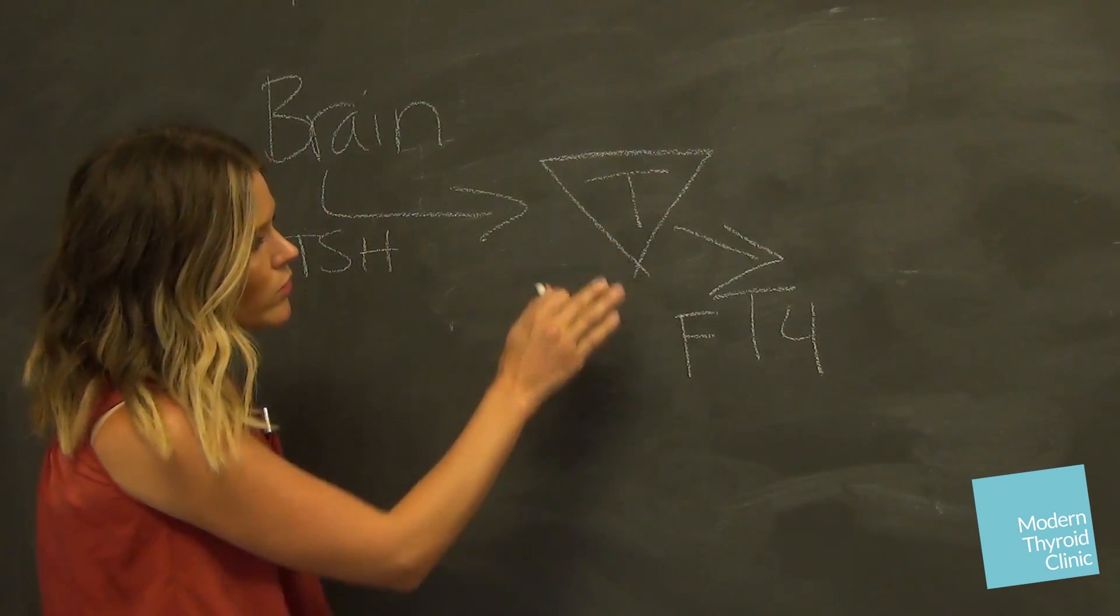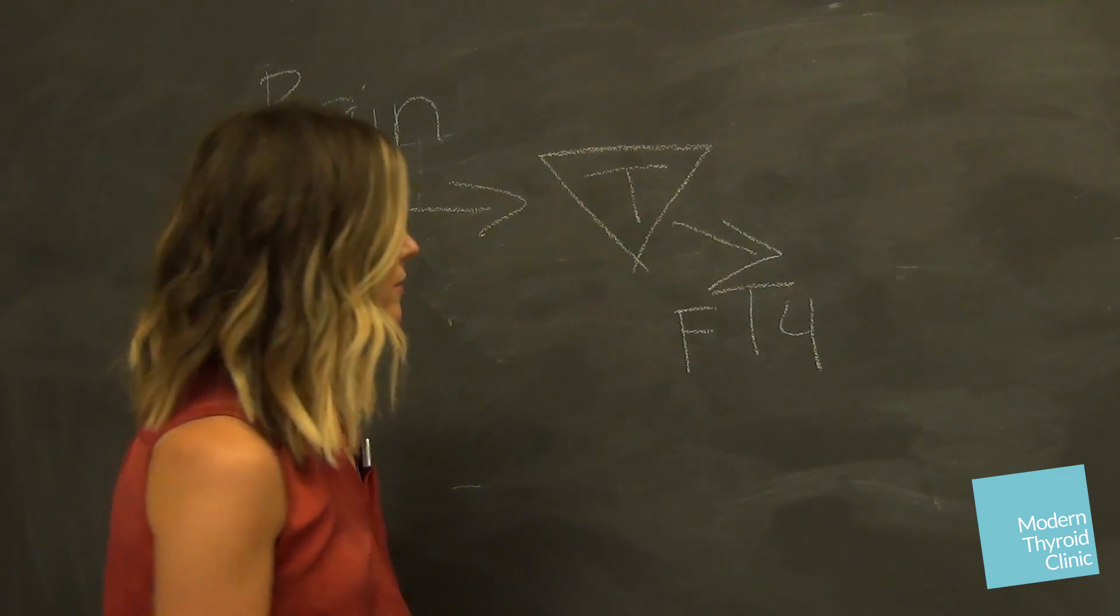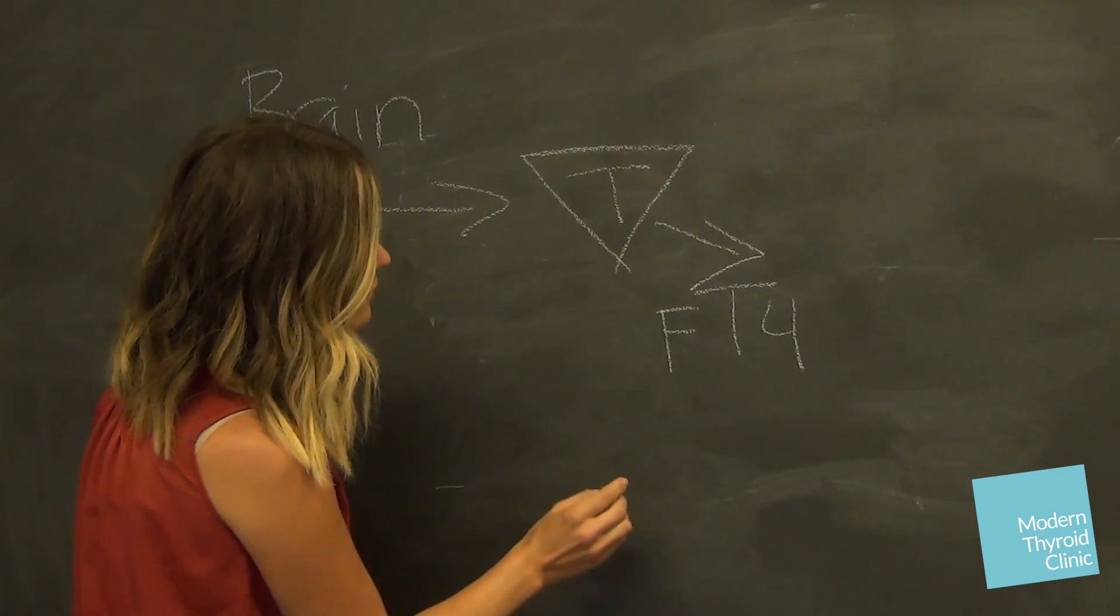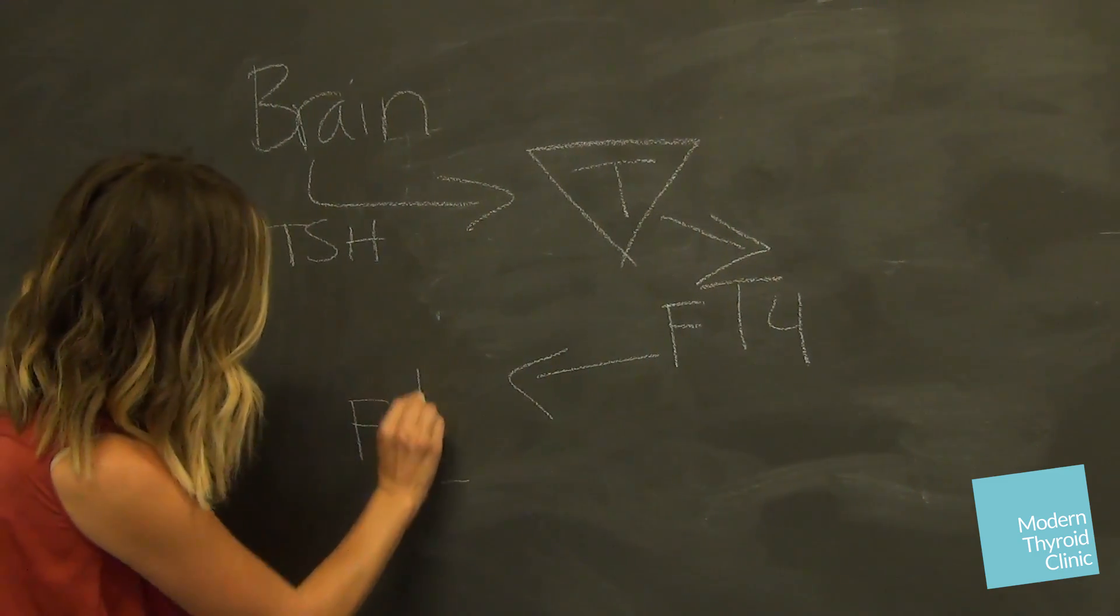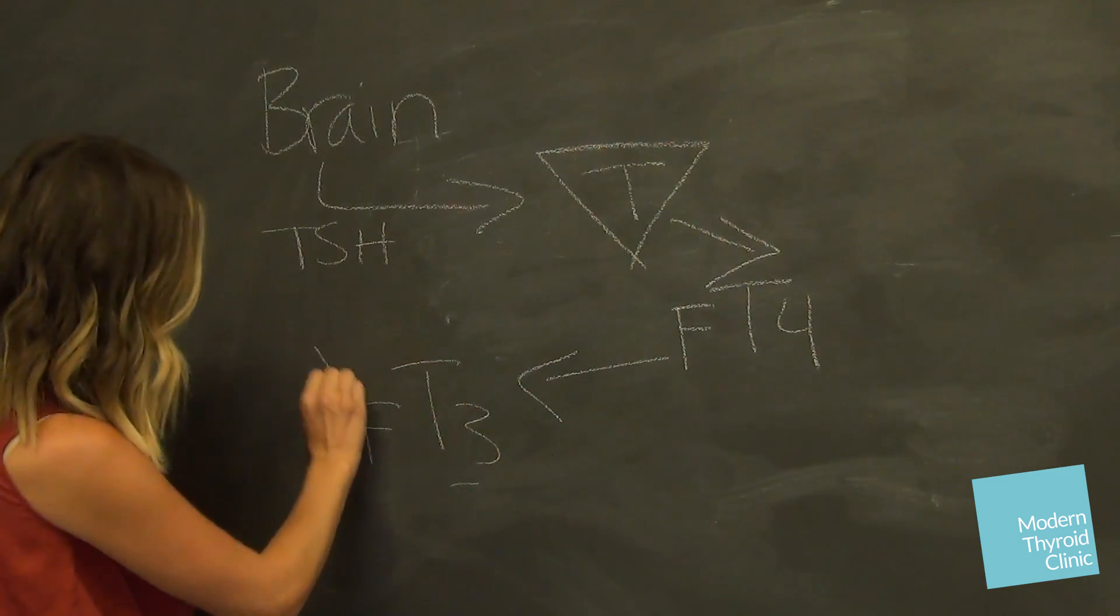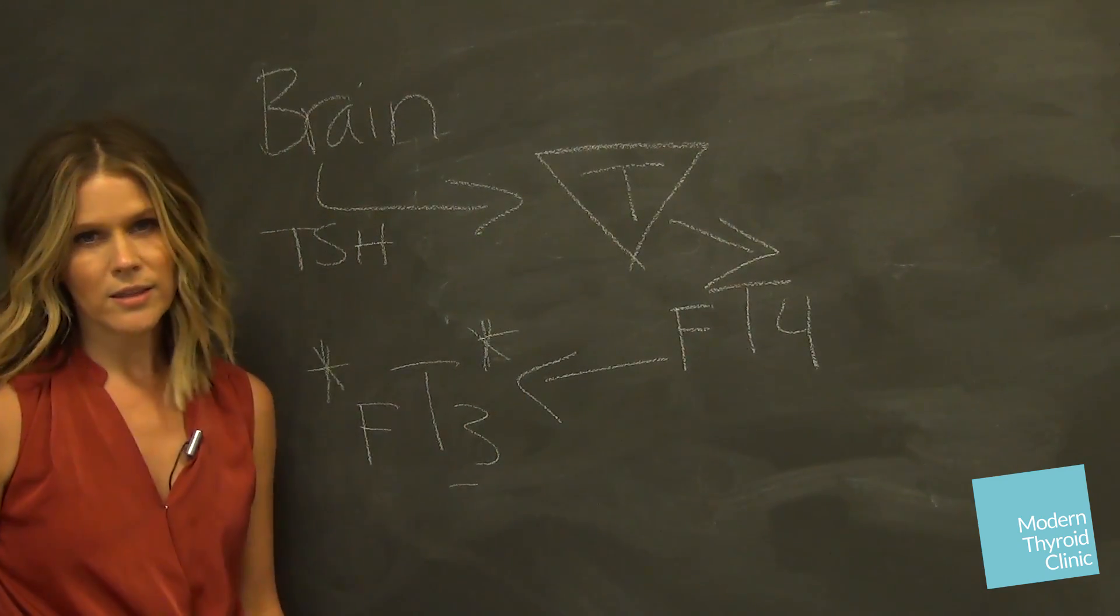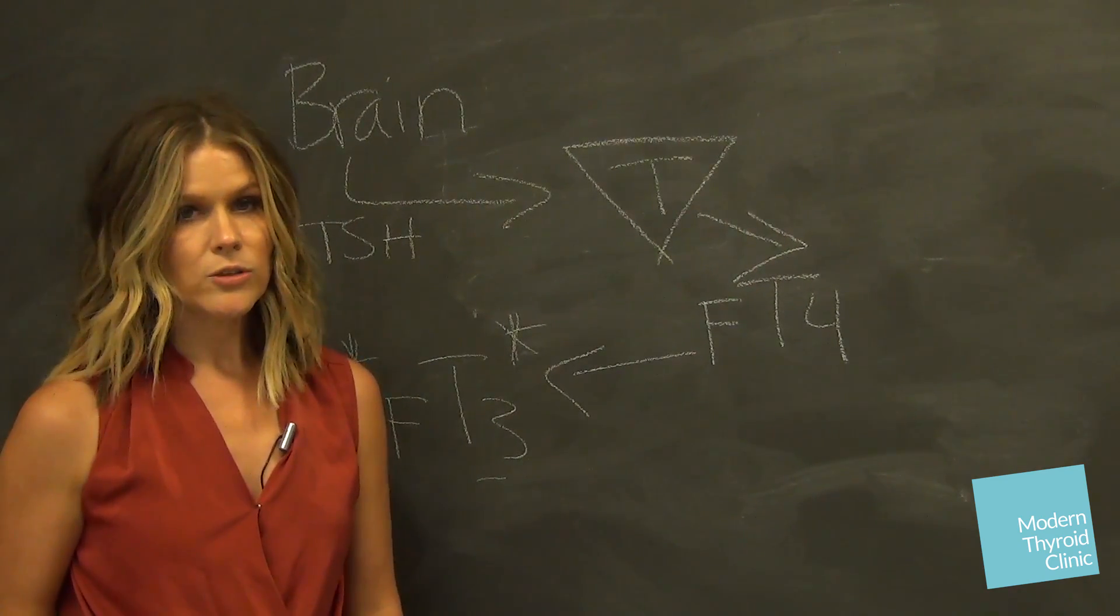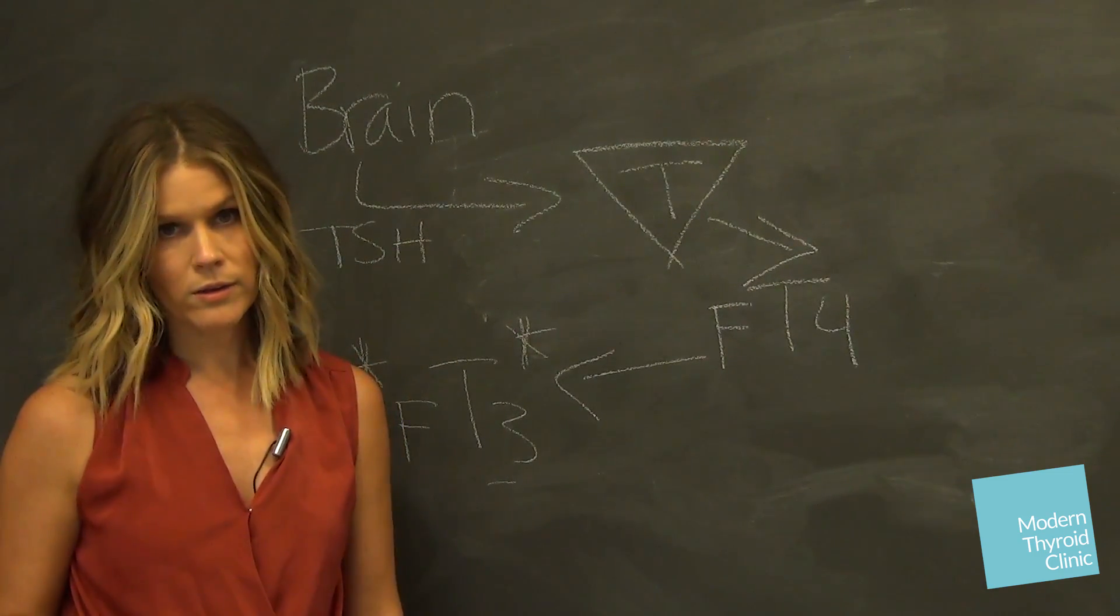So thyroid secretes free T4 and really one of three things actually happen. Either your T4 is converted to what we want it to be converted to, free T3—this is our money maker, this is our thyroid gasoline. It's really the only thing that dictates whether you're hyper, hypo or just right, euthyroid. So everything relies on this T3.